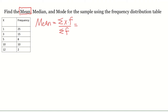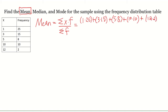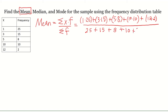On the top we're going to have 1 times 25, plus 3 times 15, plus 5 times 8, plus 10 times 10, plus 12 times 2. That's going to give me the sum of all of the x values. Then I'm going to sum the frequencies: 25 plus 15 plus 8 plus 10 plus 2. When I sum all the frequencies, that gives me the total number of data in my sample size.